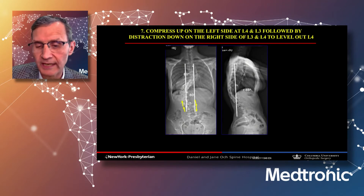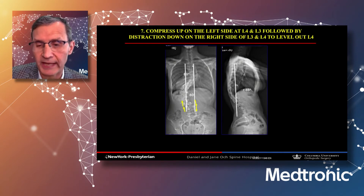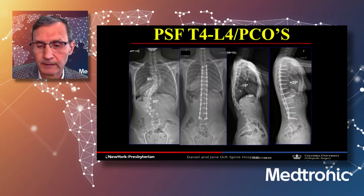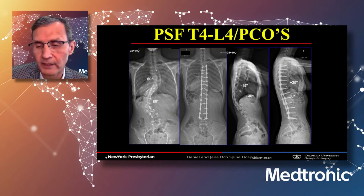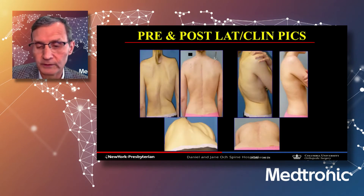The last step is to horizontalize L3 and L4: I compress up on the left-sided screws and distract down on the right-sided screws to completely horizontalize L3 and L4 and center that on the sacrum. The two-year postoperative radiographs show perfect coronal alignment, improved sagittal alignment with thoracic kyphosis created and thoracolumbar junctional kyphosis removed. Clinical photos highlight the three-dimensional correction of the trunk, especially on axial views.